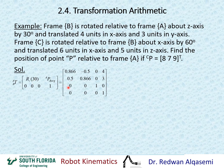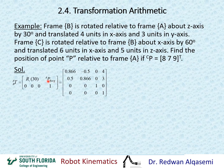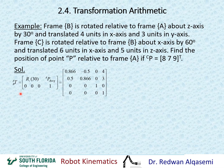For the translation portion, P of B origin relative to A is given as 4 units in X and 3 units in Y — so that's 4, 3, and 0 since Z is not mentioned. The standard last row is 0, 0, 0, 1. That defines T of B relative to A.